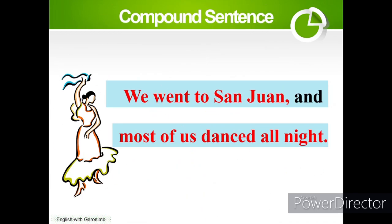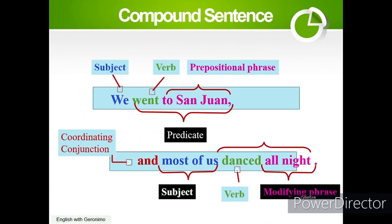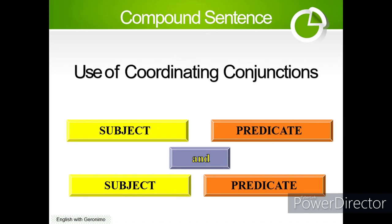Let's have an example: 'We went to San Juan, and most of us danced all night.' Here, 'we' is the subject, 'went' is the verb, 'to San Juan' is a prepositional phrase — so 'went to San Juan' is the predicate. We use the coordinating conjunction 'and.' Then 'most of us' is the subject, 'danced' is the verb, and 'all night' is a modifying phrase — so 'danced all night' is the predicate. This shows a compound sentence with a coordinating conjunction.